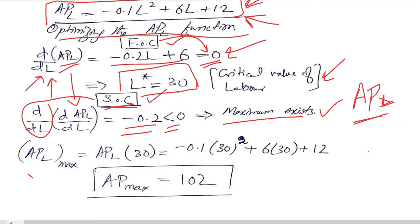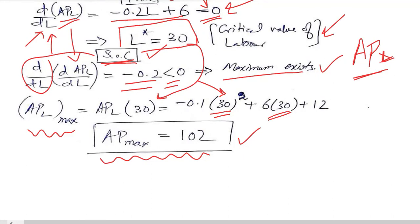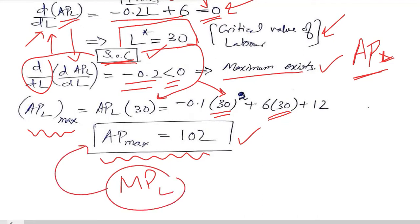To find the average product of labor at its maximum, we substitute the critical value of 30 into the average production function. Doing so gives us the average product of labor at the maximum level, which equals 102. We can also try to maximize the marginal product of labor, now that the average product has been found.